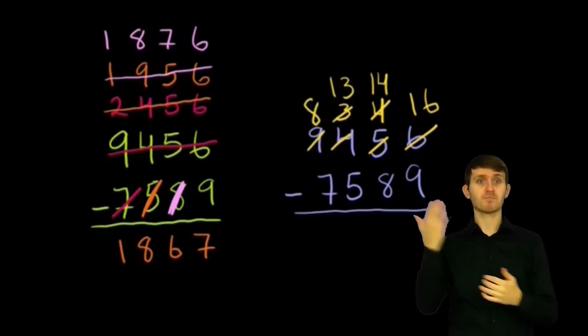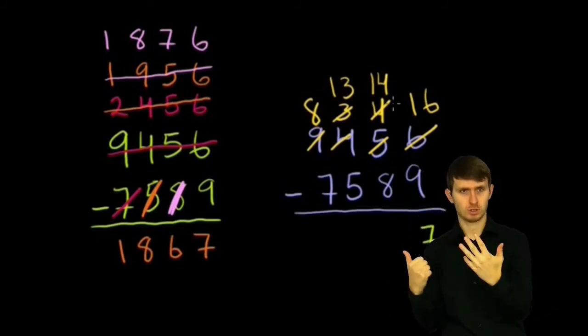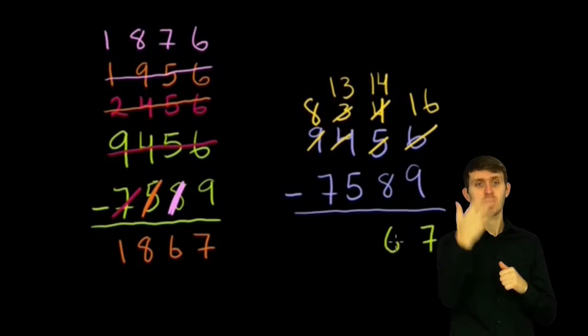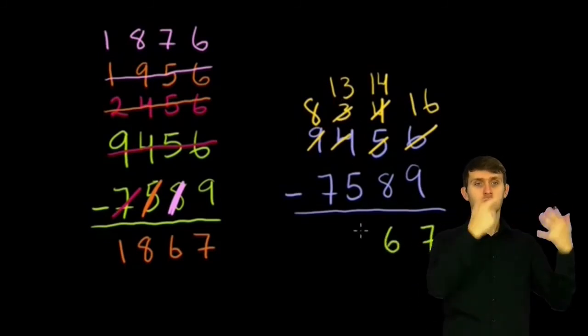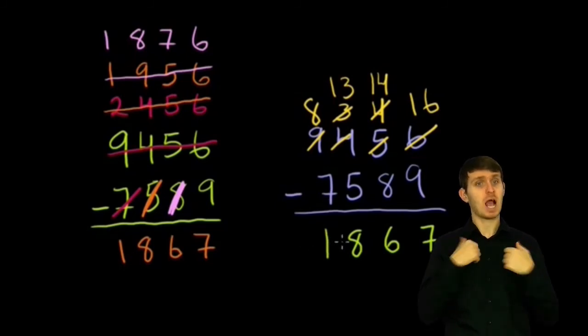So you get 16 minus 9 is 7. 14 minus 8 is 6. 13 minus 5 is 8. 8 minus 7 is 1. And lucky for us, we got the right answer.